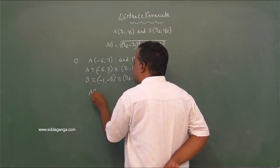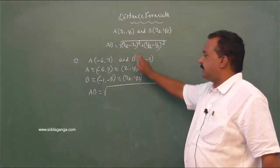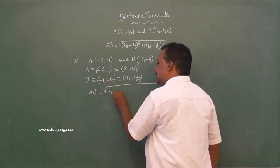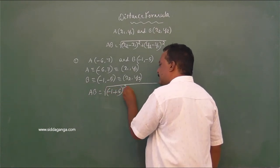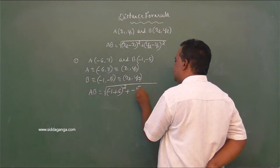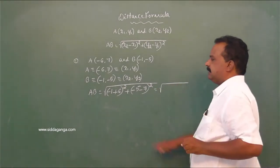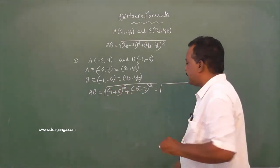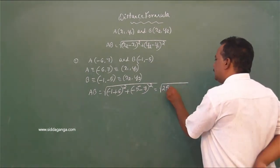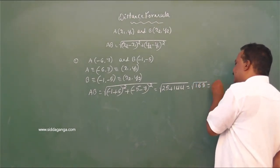You can use the formula directly. x2 minus x1: x2 is −1, x1 is −6, so −1 minus (−6) = +5, whole square. Plus y2 minus y1: y2 is −5, y1 is 7, so −5 minus 7 = −12, whole square. That gives you √(25 + 144) = √169 = 13.